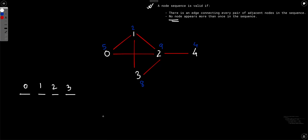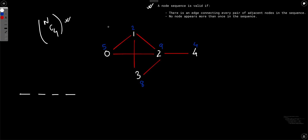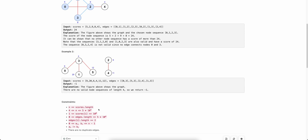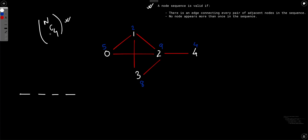The very brute force solution would be to try every possibility — take four elements from the given nodes, check whether they form a valid sequence, take the sum, and find the maximum across all sums. But this will not pass the time complexity because n can be up to 5×10⁴, so n to the power 4 will surely not pass.